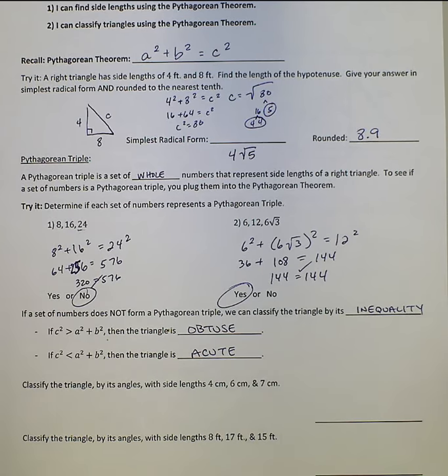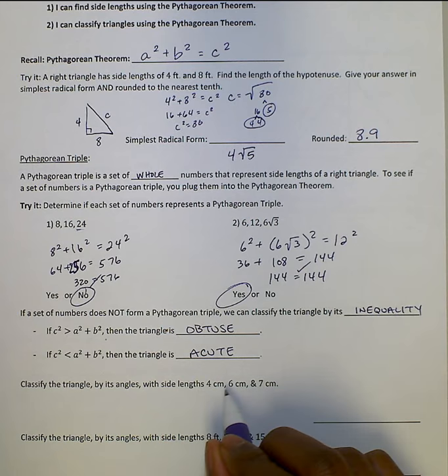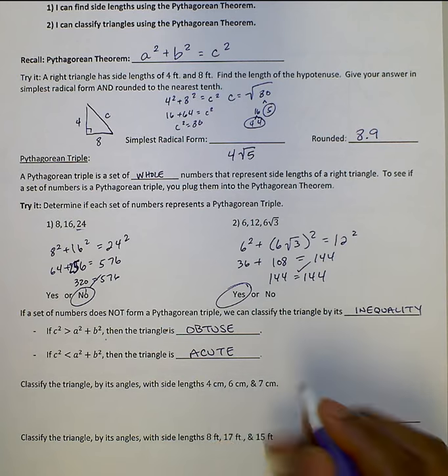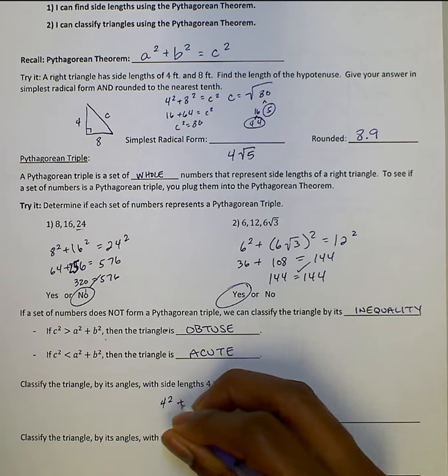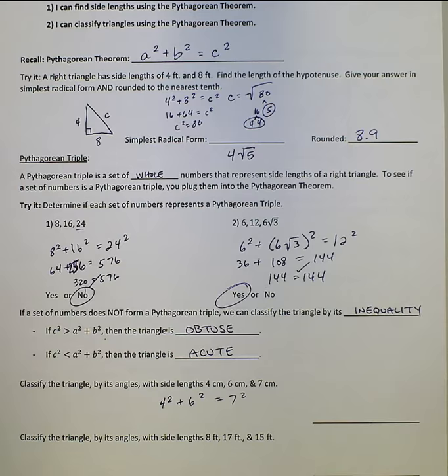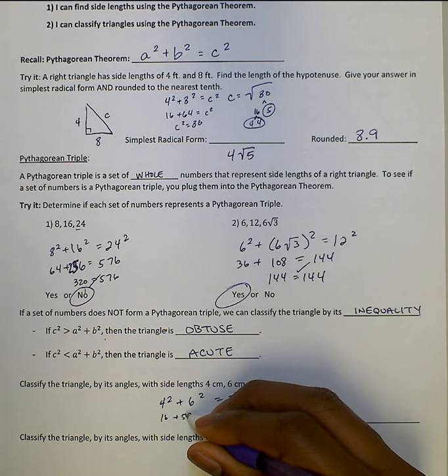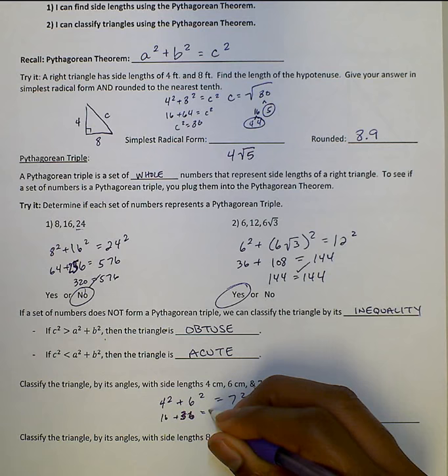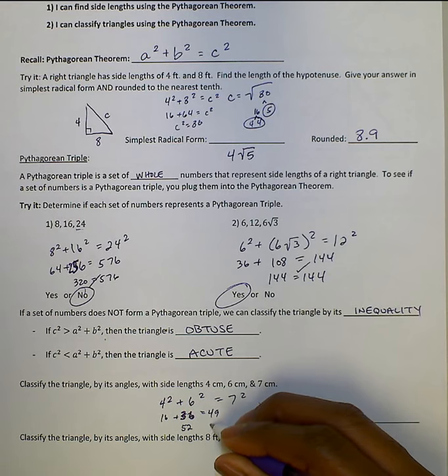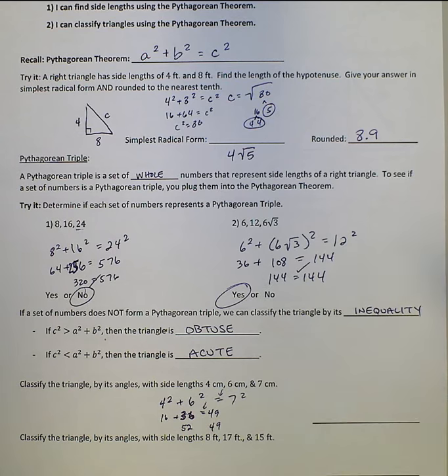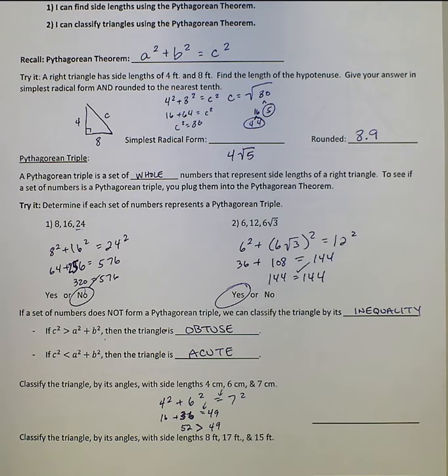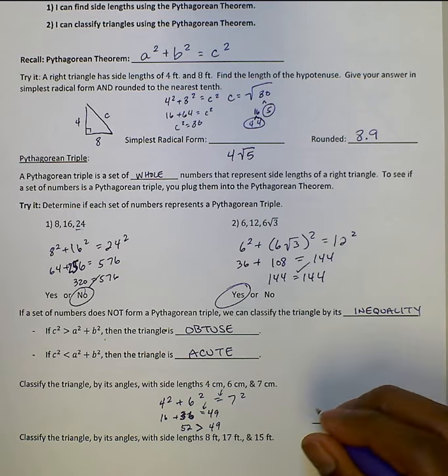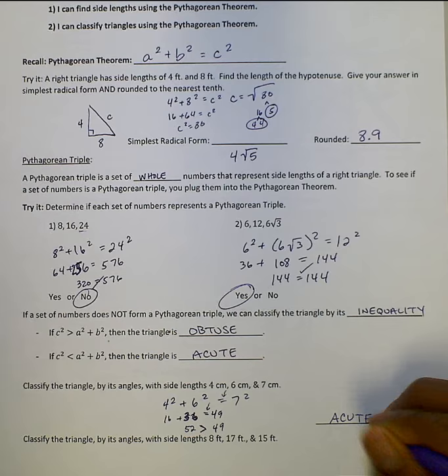So we're going to classify this triangle by its angles with side lengths 4, 6, 7. We're going to see whether it's acute, obtuse, or right. The tip for this is to make sure that you have what would be the hypotenuse by itself. The largest number has to be the number by itself. So you have 16 plus 36 equals 49. We'll have 52 and 49. Now I see that A squared and B squared is greater than C squared, so I know that this is going to be an acute triangle.